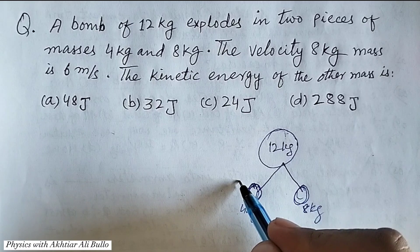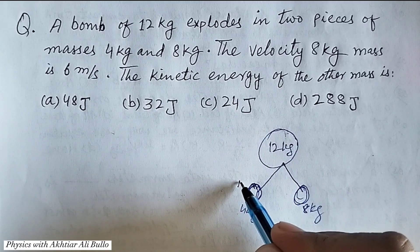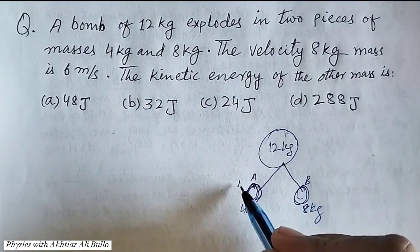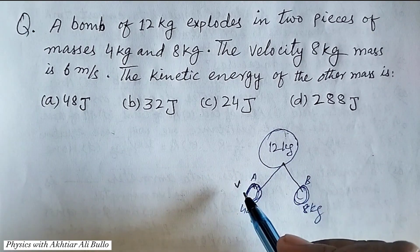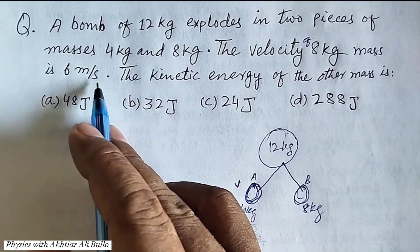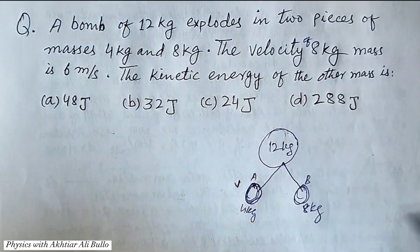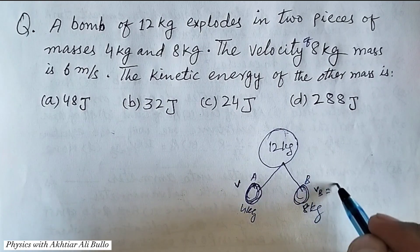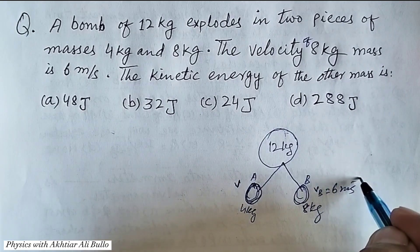So, this is mass A and this is mass B. The velocity of 8 kg mass is 6 meter per second, means the velocity of B is 6 meter per second.